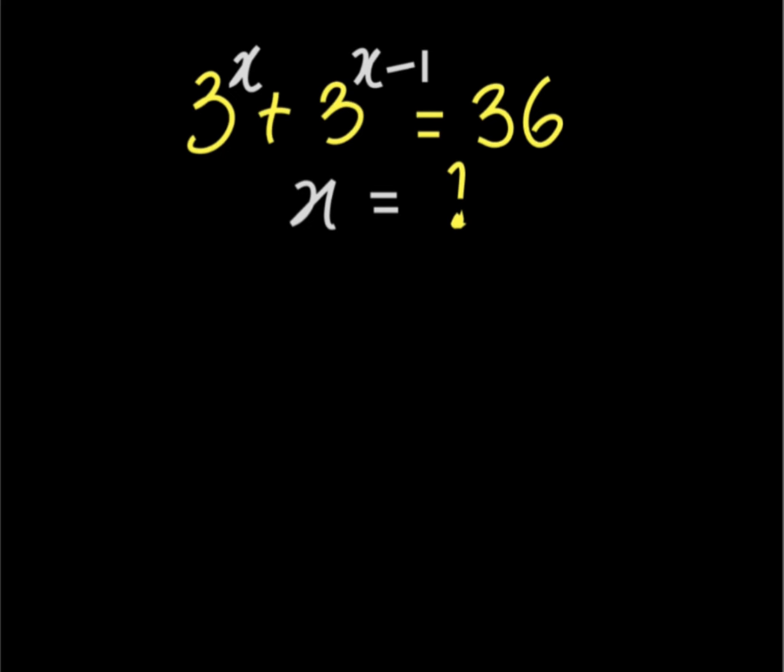Our target is to find the value of x. This is the same as 3 to the power of x plus 3 to the power of x multiplied by 3 to the power of negative 1, from the laws of indices, equal to 36. Because if you add the exponents in this product, you have x plus minus 1, which gives us this back.